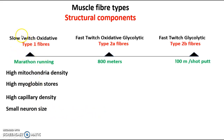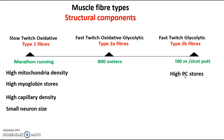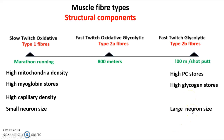In direct contrast, looking at fast twitch glycolytic fibres used for 100m or shot put: they have high phosphocreatine stores, which can be broken down to give anaerobic energy; high glycogen stores, because it is a fast twitch glycolytic fibre; and a large neuron size because they must be extremely high intensity and explosive in their force. So fast twitch glycolytic fibres have high PC, high glycogen, and large neuron size.